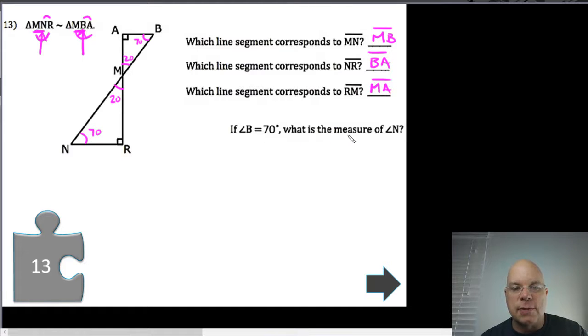So if angle B is 70, what's the measure of angle N? It's also 70. So I didn't really need to do all that figuring out of angle M, but I just couldn't help myself when I see an angle relationship. I'd like to fill in the dimensions.